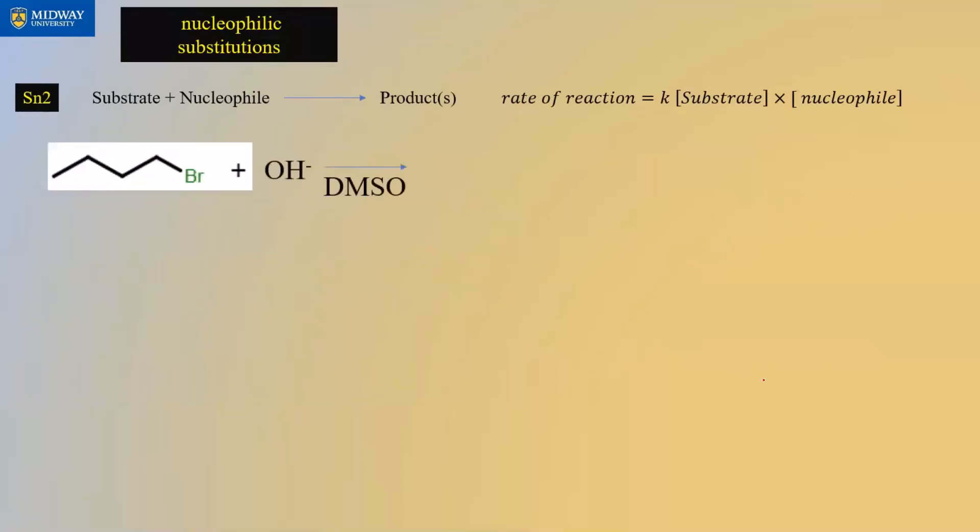Here's an example. The leaving group is attached to a primary carbon — it contains two hydrogens — so chirality is not possible. The base is a strong, negatively charged base, and this is an aprotic solvent. The nucleophile attacks the carbon containing the leaving group, and the leaving group leaves at the same time. Essentially, we're replacing the Br with an OH.